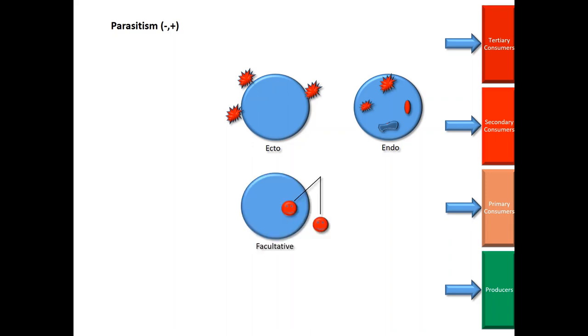Whereas some organisms need host to complete their life cycle. For example, malaria parasite. It is an example of obligatory parasitism.